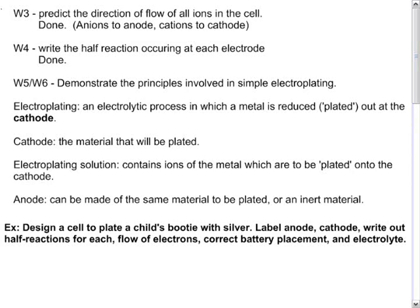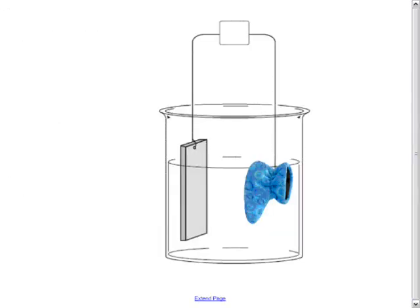Okay, the first step is to actually draw the cell. Hopefully you've drawn something that looks a little bit like this. So we have our two electrodes, one being the child's bootie here, and then we have our anode over here. Now we can already start off by labeling this: the child's bootie of course will be on the cathode.